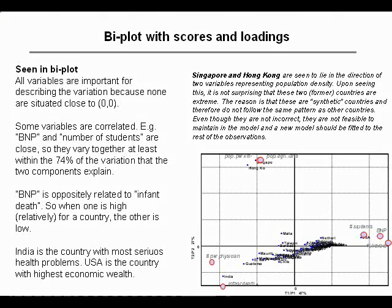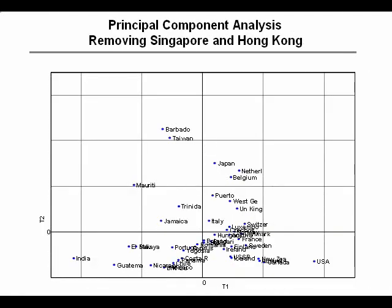We can also see for the samples that India is located in the lower left part, meaning it has the most serious health problems, whereas USA is the country that has the highest economical factors. If we look at the PCA plot when we have excluded Singapore and Hong Kong, it's easier to see the different details in the data. Now we can start to look more in detail into the patterns, into what countries are grouped together, and we can make some quite interesting observations.